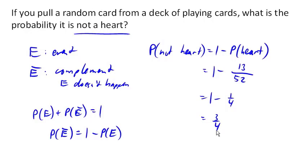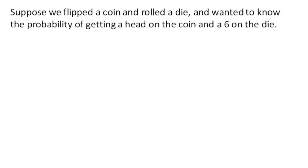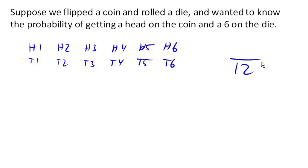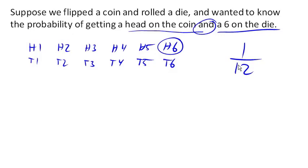These are complementary events. Suppose we flipped a coin and rolled a die, and we wanted to know the probability of getting a head on the coin and a 6 on the die. We could list all possible outcomes: head-1, head-2, head-3, head-4, head-5, head-6, tails-1, tails-2, tails-3, tails-4, tails-5, tails-6 — a total of 12 possible outcomes. Only one of them has a head on the coin and a 6 on the die, so there's a 1/12 probability.